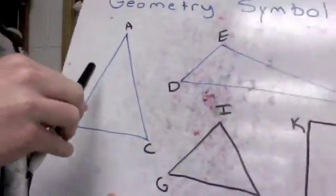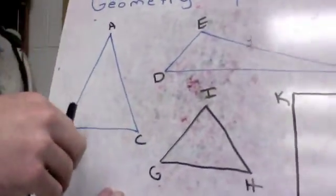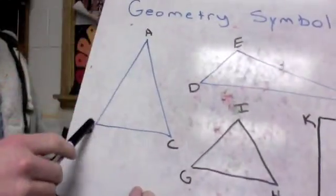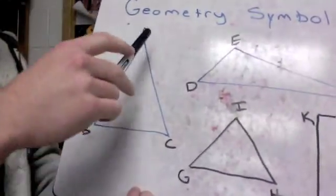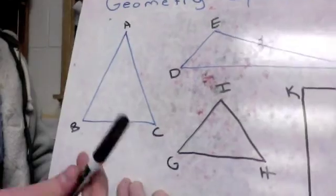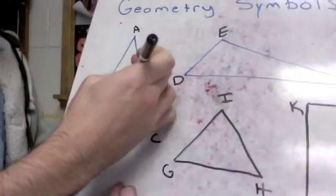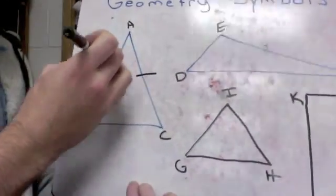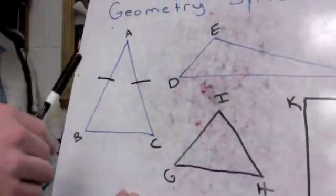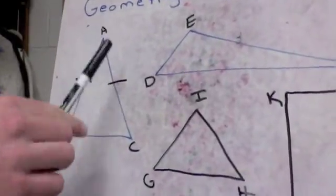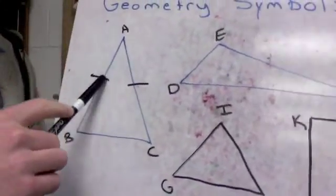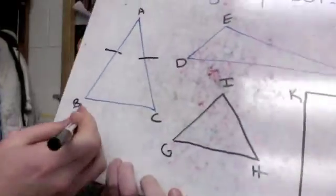So for instance, in this isosceles triangle, AB is the same as AC — they're the same length. You'll see this a lot: a line through here and a line through here. If they have a line through them and it's the same amount of lines, like one line and one line, that means they're the same.